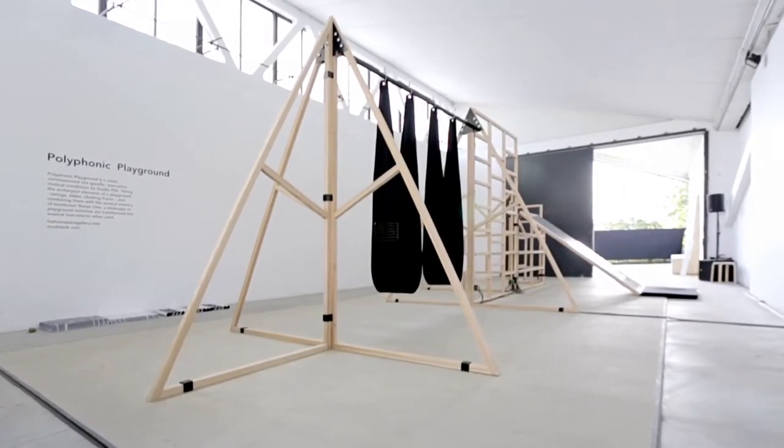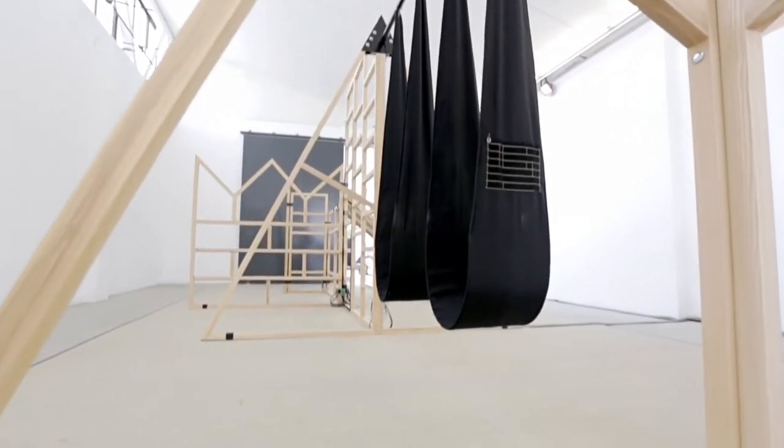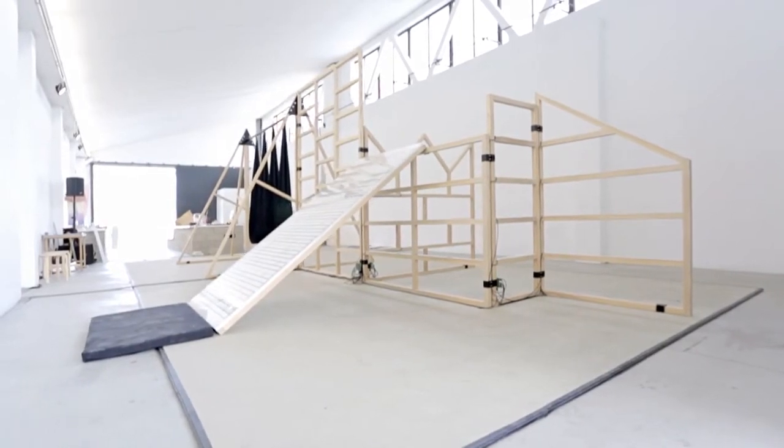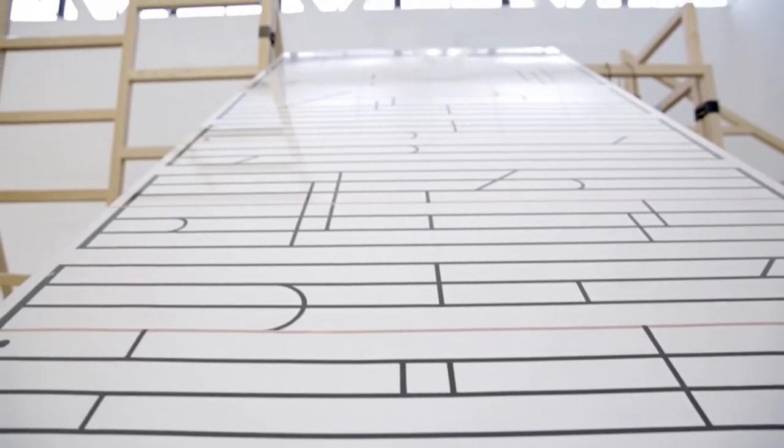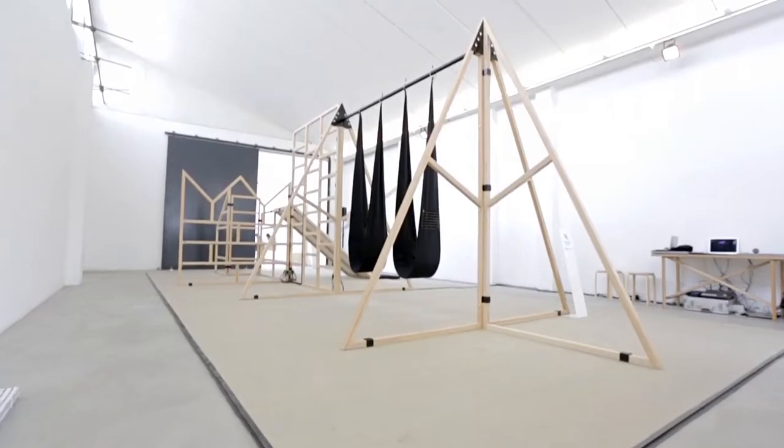Polyphonic Playground consists of three parts. One was the swing which we use conductive thread, then the other side was the steps which we use screen paint and conductive paint, and for the slide we use conductive tape. So it's all three different materials but they work in a similar way.